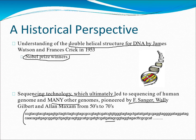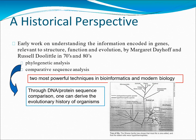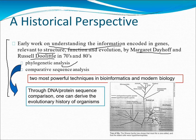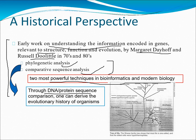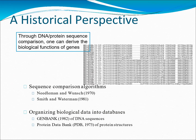The most important one is the early work on understanding information encoded in genes relevant to structure, function, and evolution by Margaret Dayhoff and Russell Doolittle in the 70s and 80s, through phylogenetic analysis and comparative sequence analysis. I'll be explaining all of this in coming videos in this series. These are the two most powerful techniques in bioinformatics and molecular biology. Through DNA and protein sequence comparison, one can derive the evolutionary history of organisms — shown here as a tree with Bacteria, Archaea, and Eukarya.